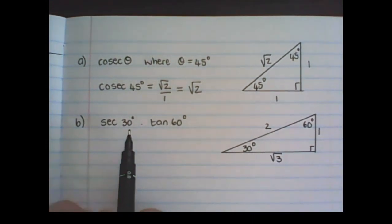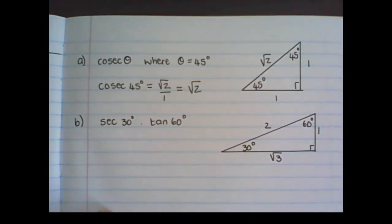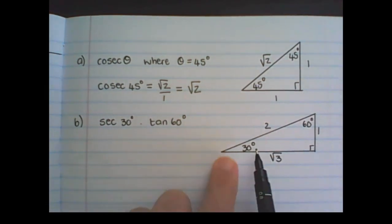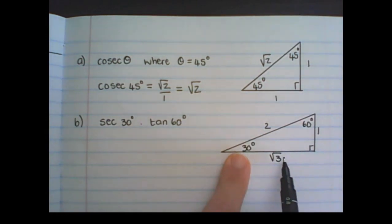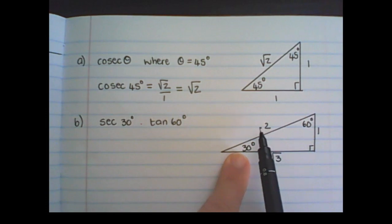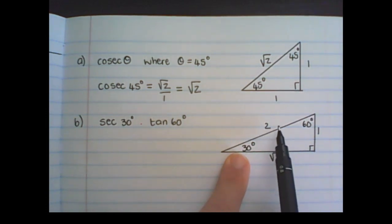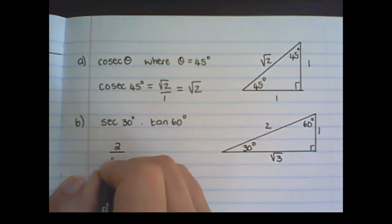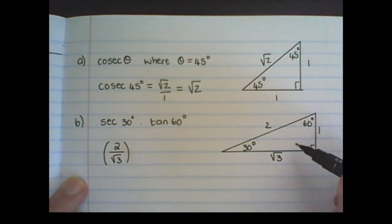How about sec 30 times tan 60? Sec is the reciprocal function of cos. So if I had the cos of 30, it would be adjacent over hypotenuse. Therefore the sec of 30 is hypotenuse, which is 2, over the adjacent, which is the square root of 3. And tan of 60 is opposite over adjacent, which is the square root of 3 over 1.